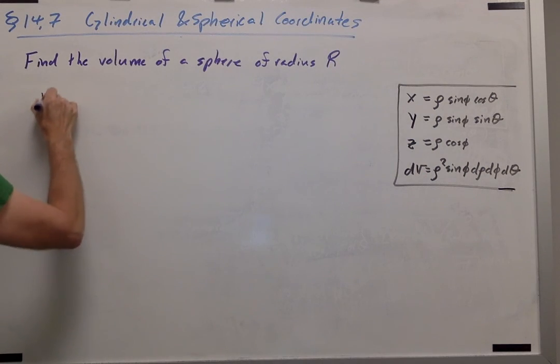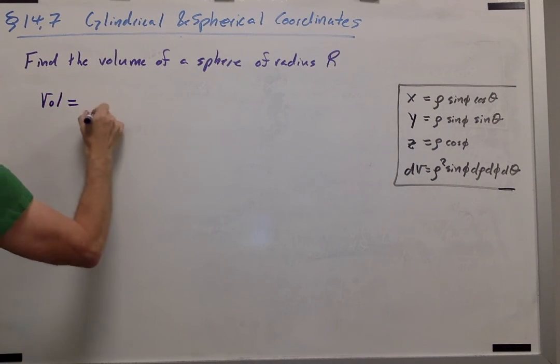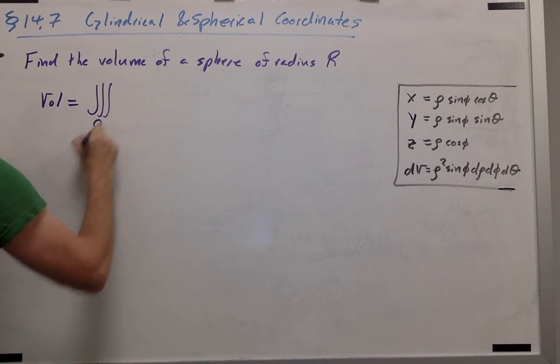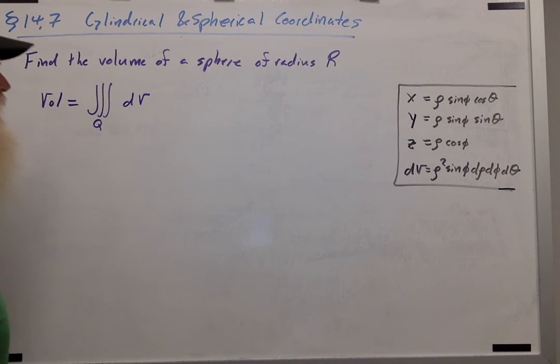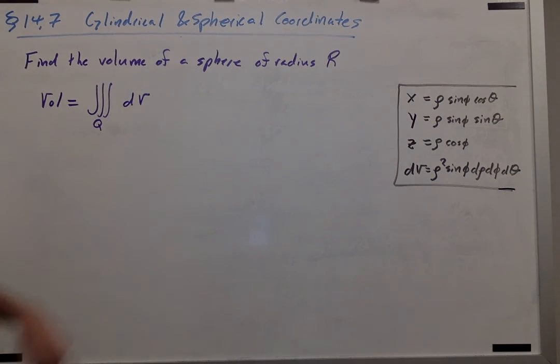So we know that the volume is going to be the triple integral over the solid of 1 dV. So let's see if we can figure out how to set the bounds up.